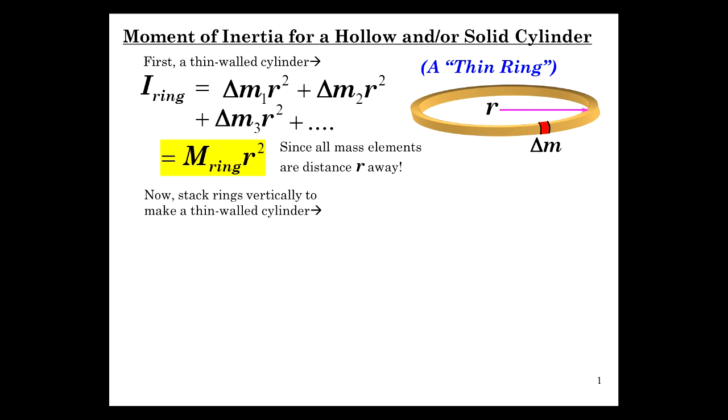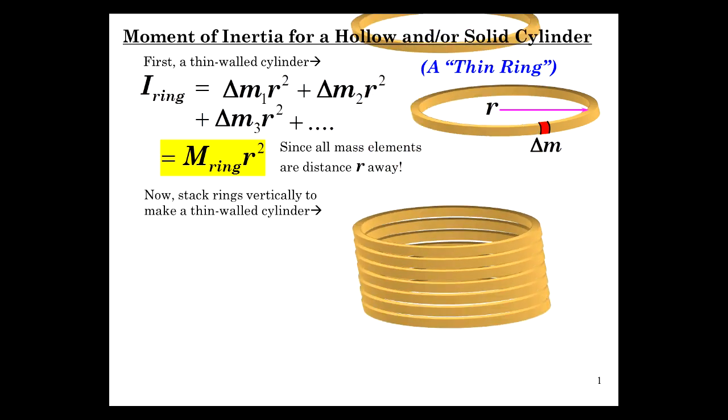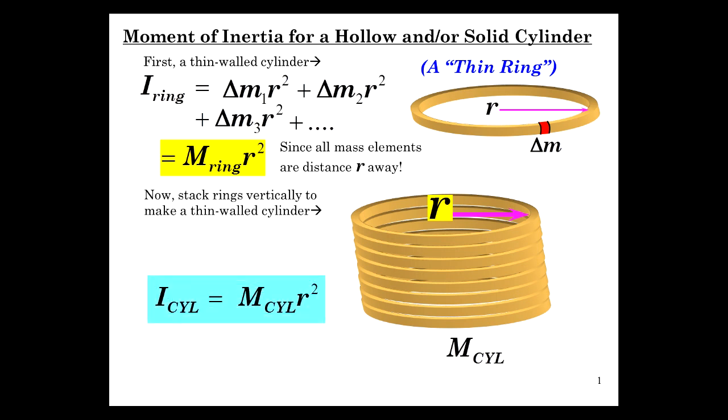So we have mass of the ring times the radius squared. And now we're going to just stack these rings like this so that we have, in effect, a thin-walled cylinder. Well, what have we really changed? Haven't we just added up a whole bunch of rings? And so the formula really shouldn't be modified, should it? Everything is at radius r still. But now the mass of the ring, all the rings added up, becomes the mass of the cylinder. So the moment of inertia for the cylinder is the total mass times radius squared. So that's the moment of inertia for a thin-walled cylinder. And it's like a pipe or a tube, and this occurs quite a bit in engineering, quite a bit in practical examples.